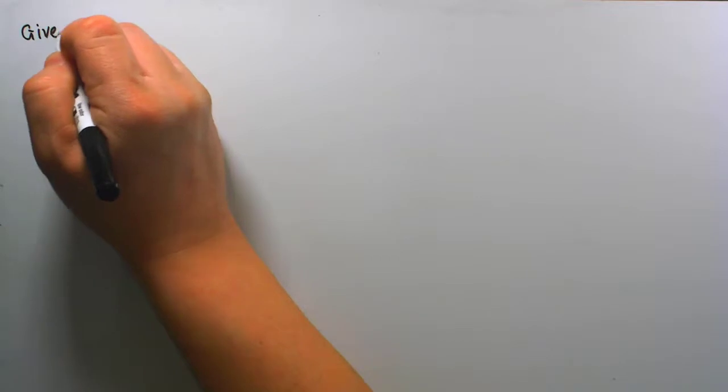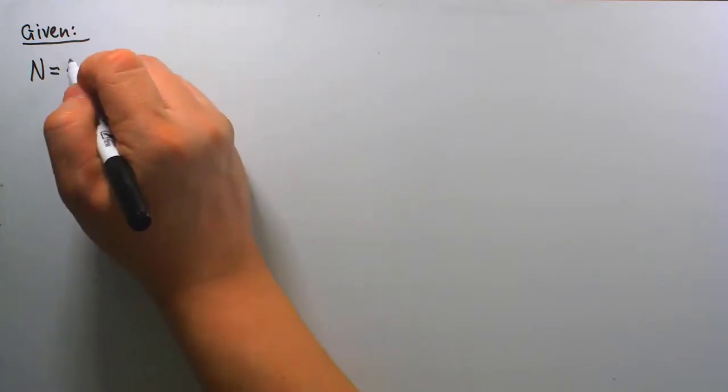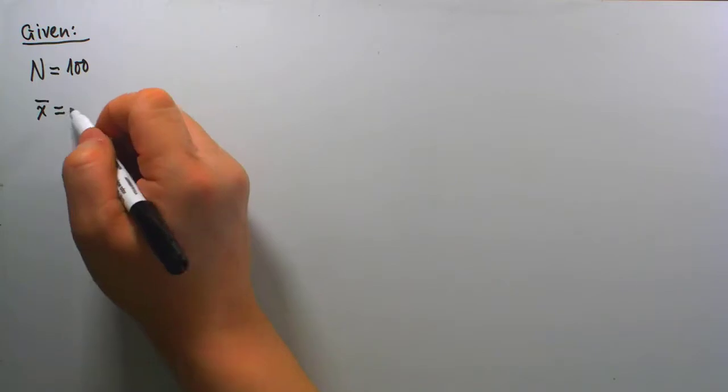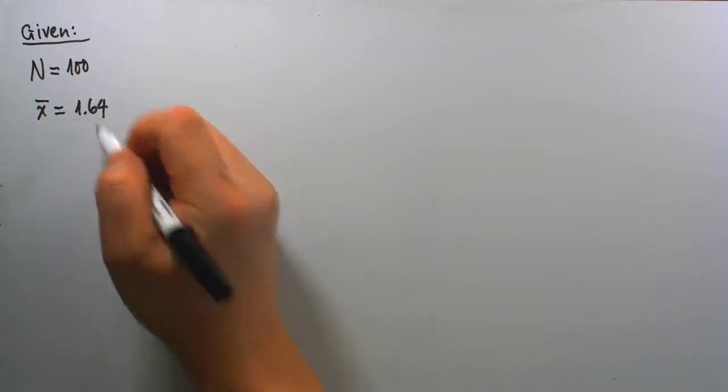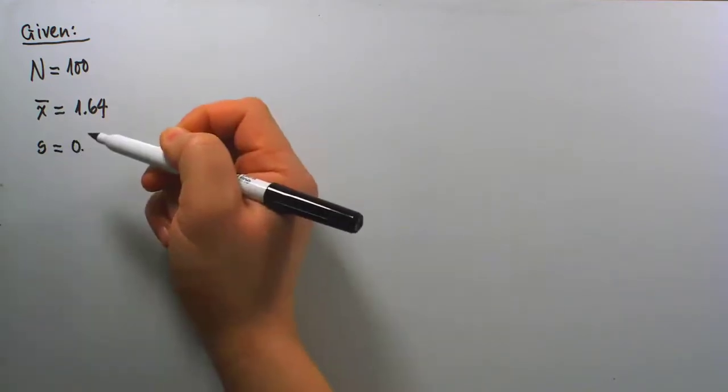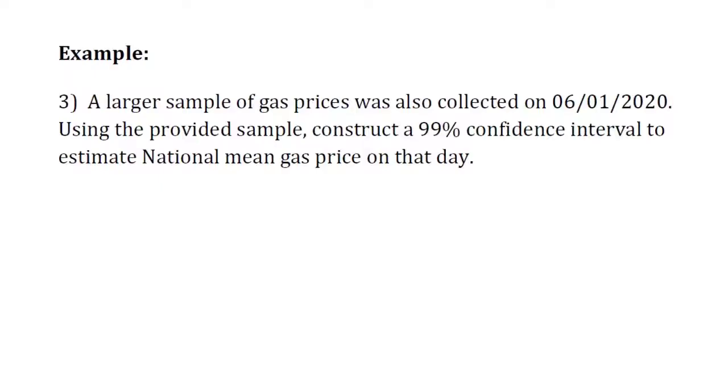As far as the given information, we're looking at a different and much bigger sample size here, n = 100. The sample mean we found is x̄ = $1.64, and we have sample standard deviation s = 0.25. Let's get back to our wording description and read further. It says: using the provided sample, construct a 99% confidence interval to estimate national mean gas price on that same day.